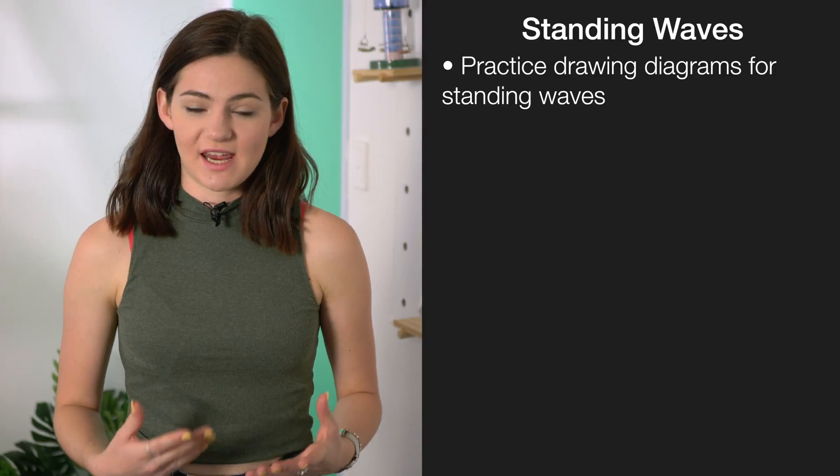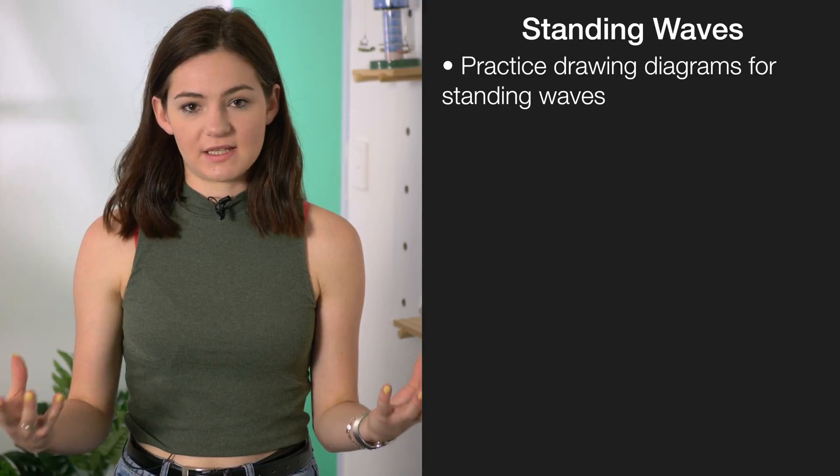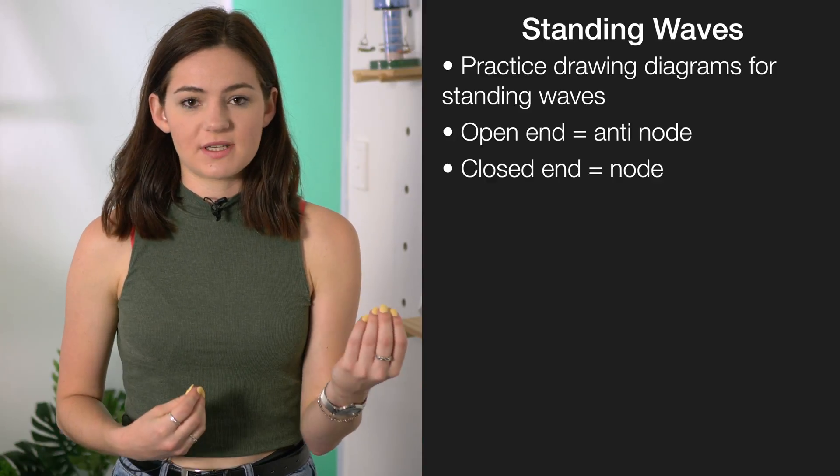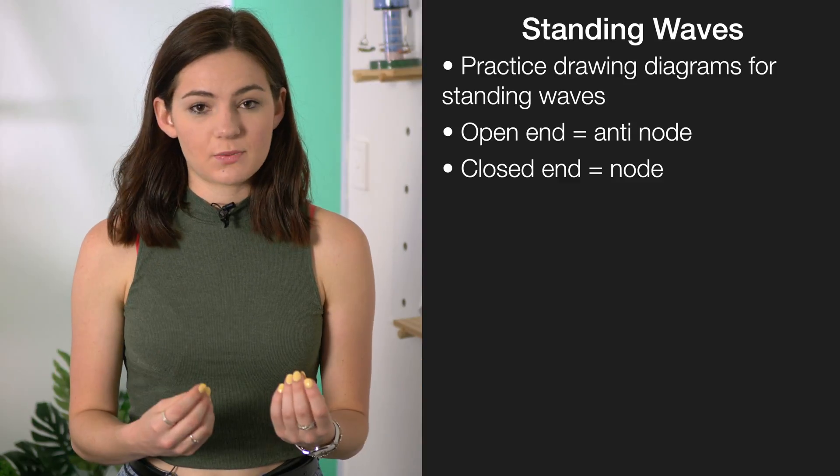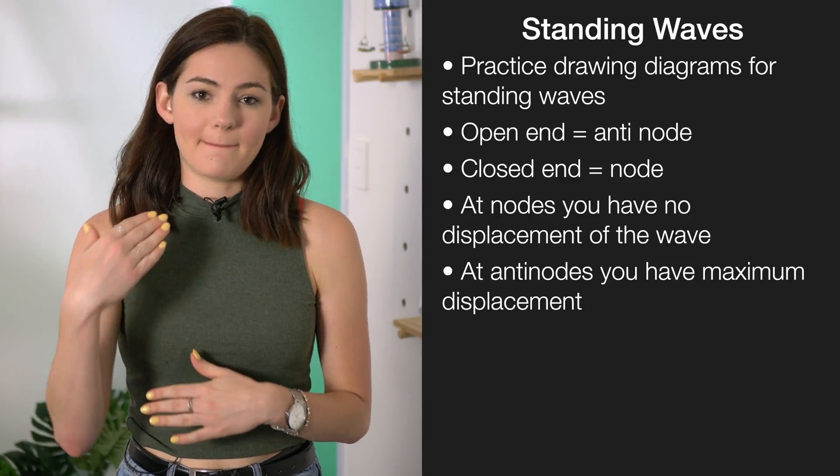Leading up to the exam, it will be useful to practice drawing diagrams for standing waves. It's important to note whether you have an open end and a closed end, or two open ends. At an open end, you'll have an anti-node, and at a closed end, you'll have a node. A node is where you have no displacement of the wave, and an anti-node is where you have maximum displacement.